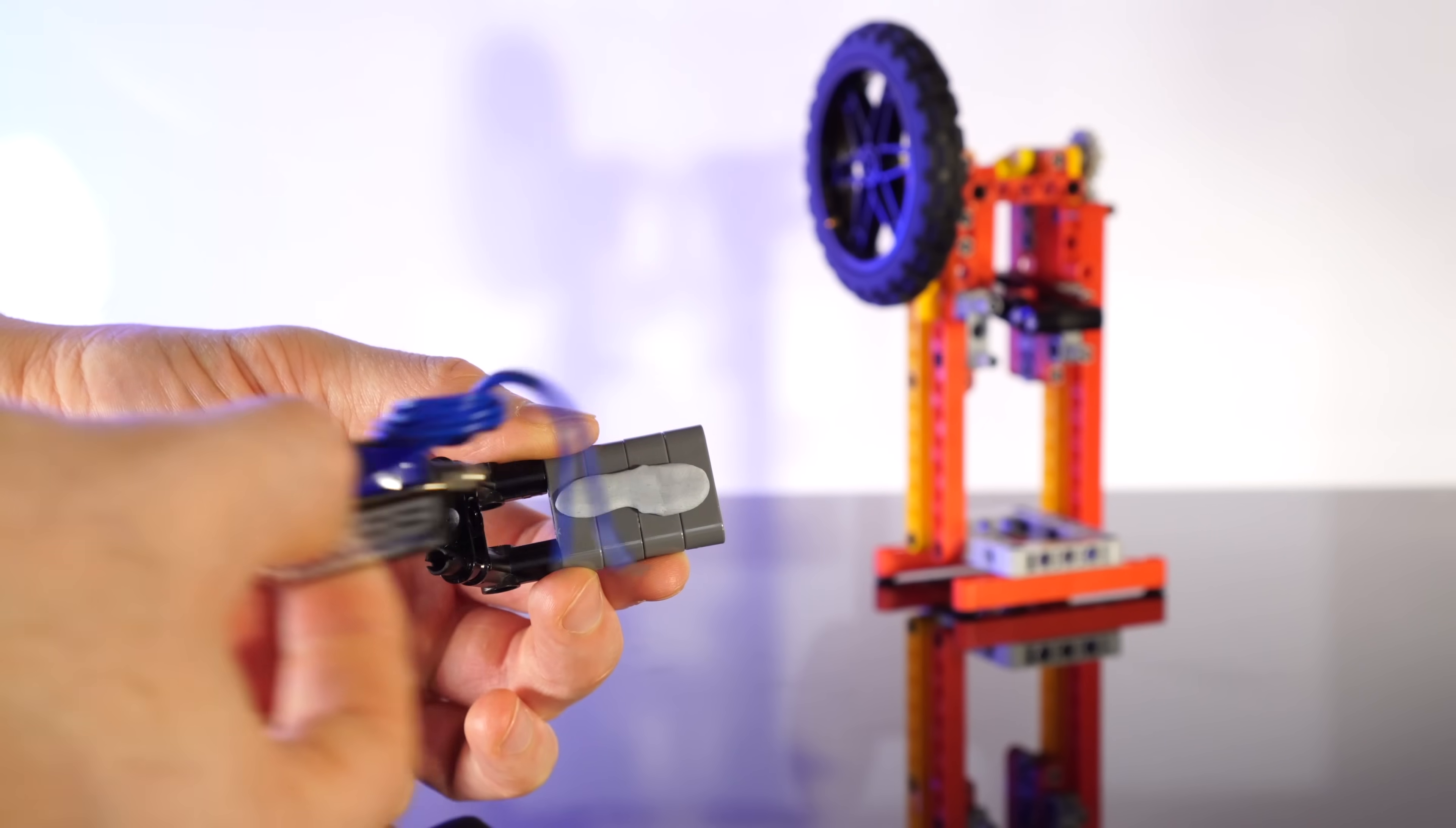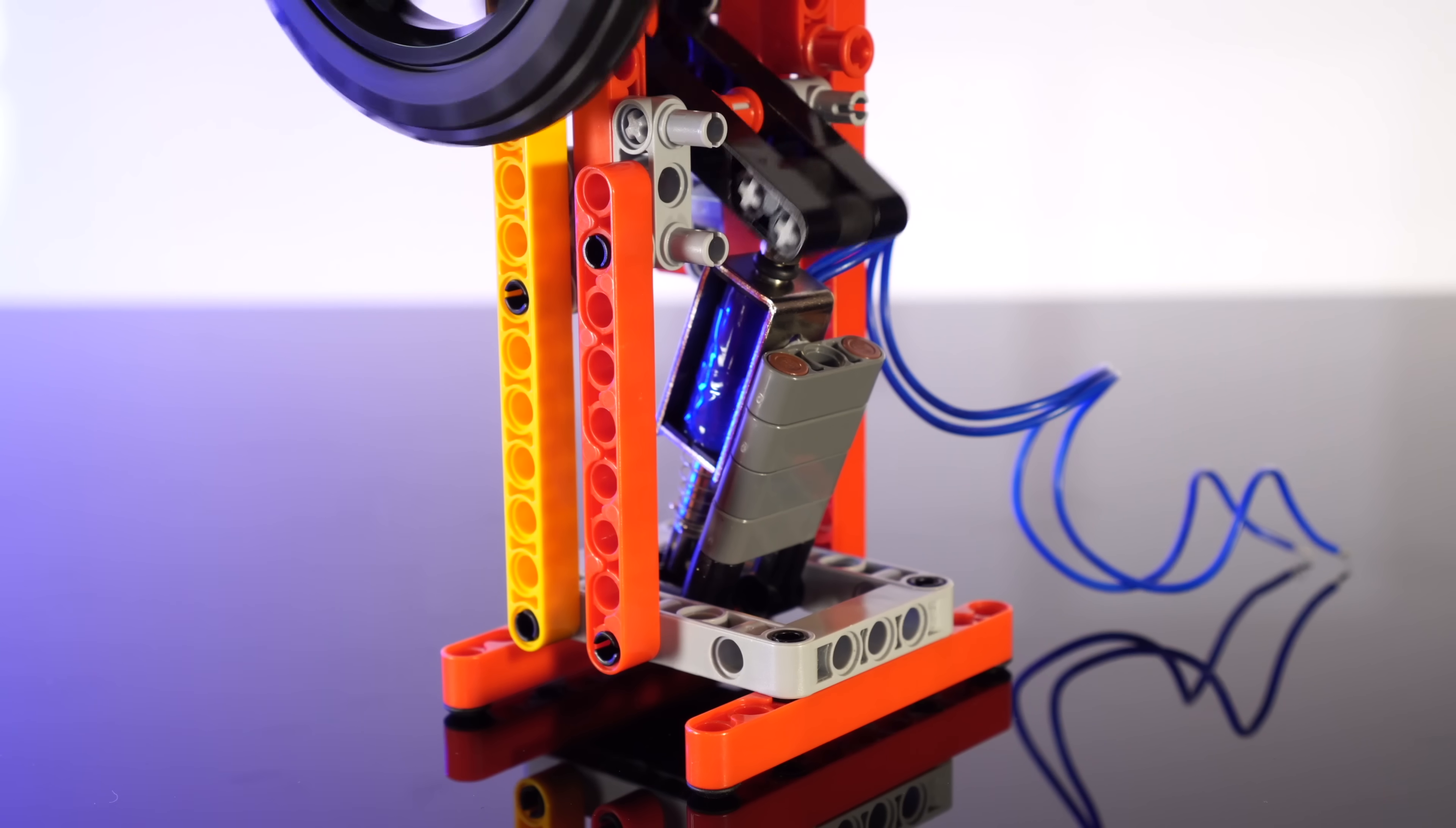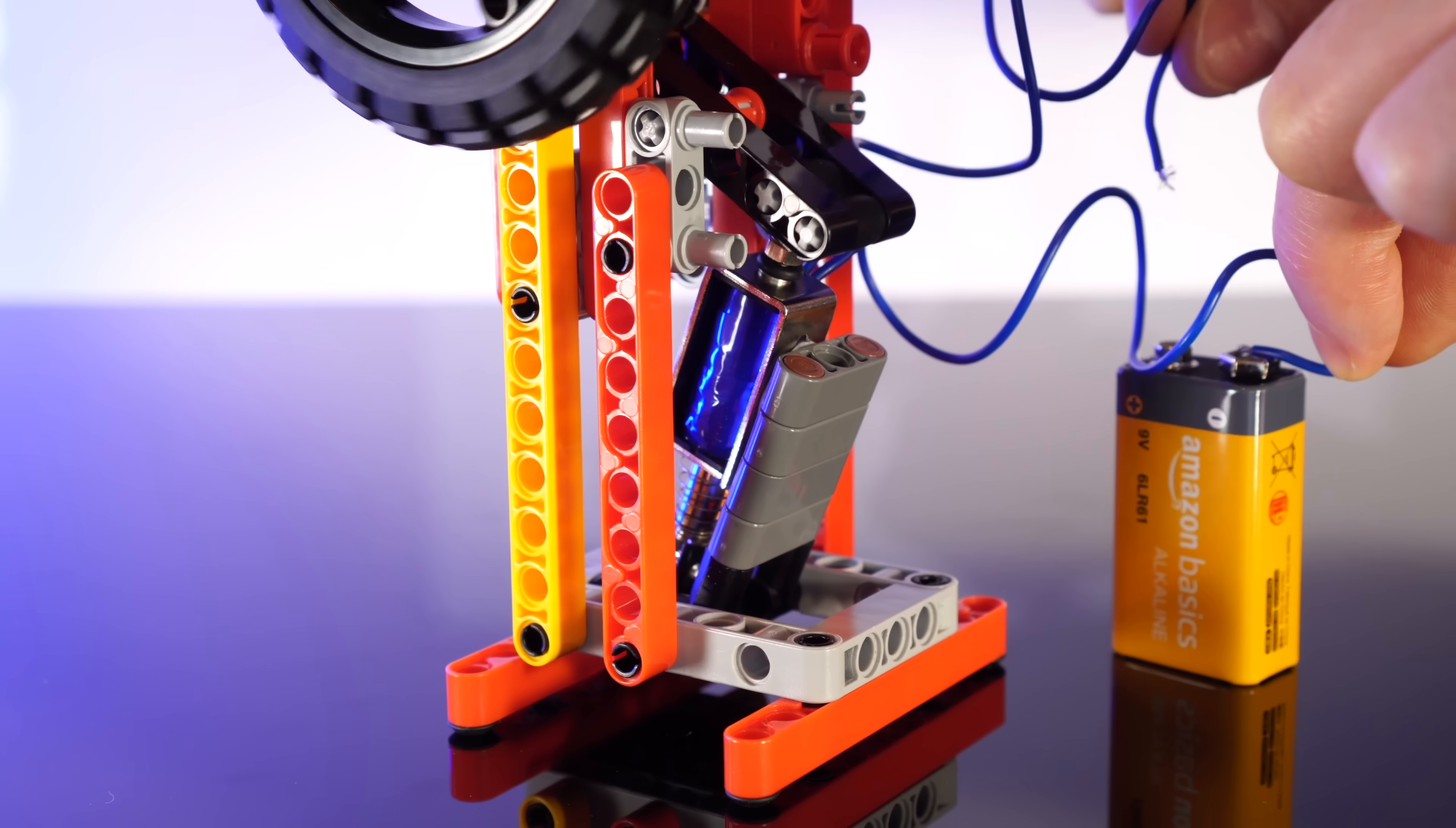First, let's mount our solenoid to just the right place. These bendy pieces will give it the perfect angle we need to punch the rubber pad. Hopefully now, each punch will drive the flywheel. Let's give it a quick test. Hey! It looks like the position and angle are about right.